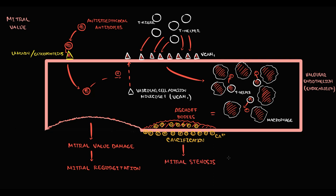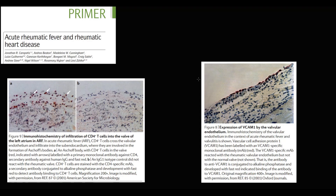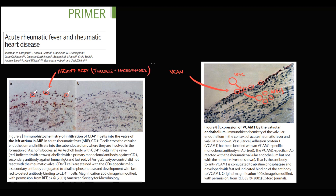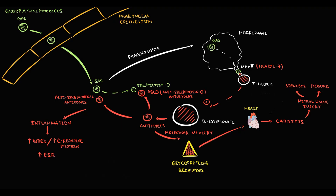So acute rheumatic fever can cause both mitral regurgitation and mitral stenosis. On this image we can see a large number of VCAM-1 molecules on the surface of the valve; white blood cells from the blood bind to these molecules and penetrate into the tissue, causing inflammation. On the second image we can see Aschoff bodies, which are T-helpers mixed with macrophages. Additionally, carditis can cause fibrosis in the conduction system, which typically manifests as prolongation of the PR interval on ECG.